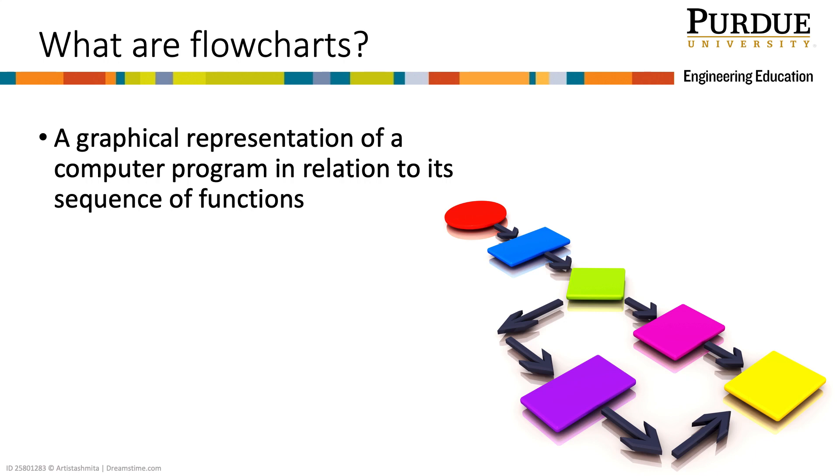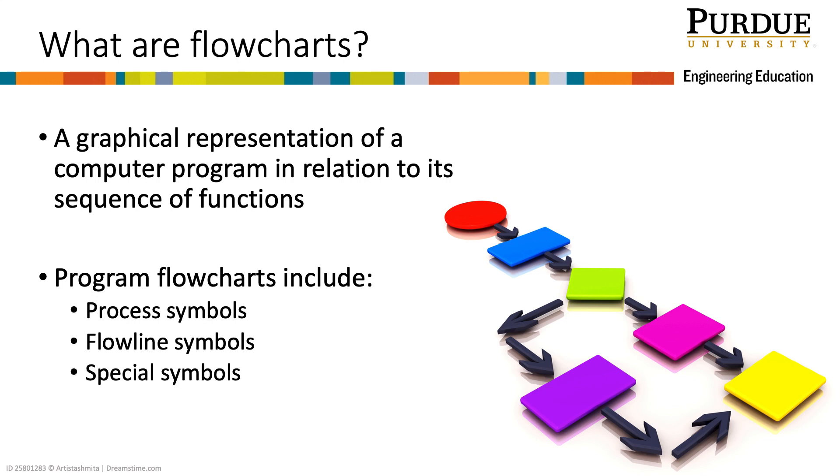Flowcharts are a graphical representation of a computer program in relation to its sequence of functions, that is, the logic and processes that underlie the program. Flowcharts include process symbols for operations and defining the path to be followed, flowline symbols to indicate the flow of control, and special symbols to facilitate the reading and writing of the flowchart.